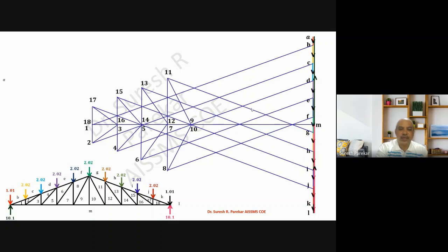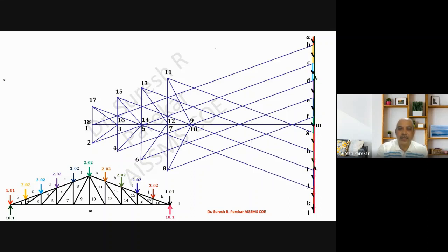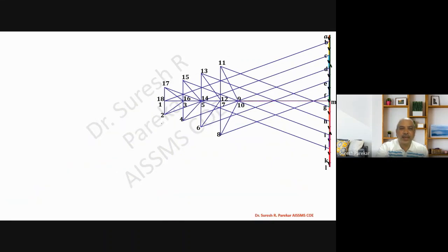Now we are interested to determine the force in each member. I have considered a scale of 0.9 cm equal to 1.01, but because it is not possible to accommodate a larger scale in this PPT, I have reduced it so that one centimeter equals 1.12. Using this scale, I have calculated forces in these members.